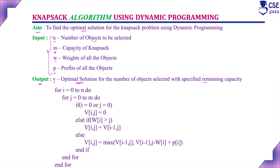This is the algorithm. We have used two for loops: the first, outer for loop condition is i equal to 0 to n, and the inner for loop condition is j equal to 0 to m. If both the outer and inner for loop conditions are true, control is transferred to the body of the loop.